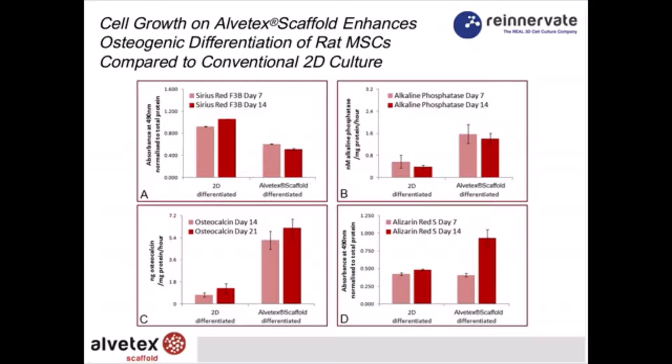The data show quite nicely that the cells produce collagen very well. Alkaline phosphatase and osteocalcin levels are significantly enhanced in 3D compared to 2D. Calcium deposition is particularly notable at 14 days of MSC culture. The protocol to induce differentiation of mesenchymal stem cells includes dexamethasone — this is a very standard technique.